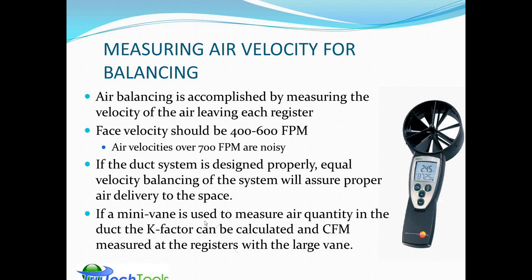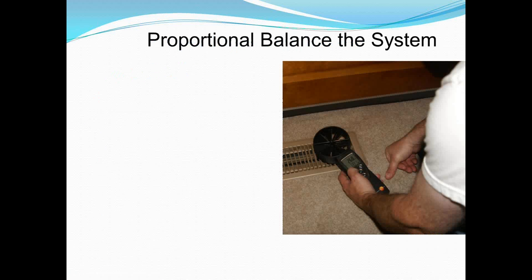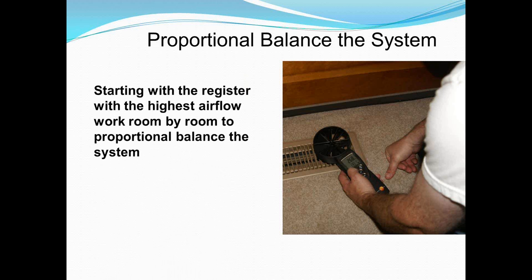There's also a technique using the mini-vane to measure in-duct airflow and the large vane at one terminal. If all the supply grills are the same type, you can compare the duct flow measurement to the sum of the terminal flows to calculate the K factor of the register. This is proportional balancing — using the Testo 417 large vane rotating anemometer (approximately $450), starting with the register that has the highest airflow and working room by room to ensure airflows are proportional to the loads.